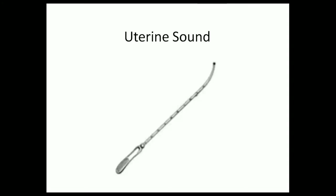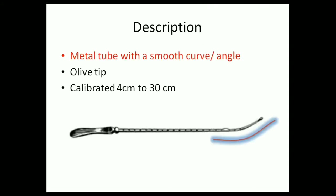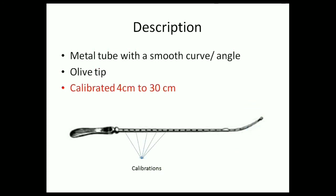Uterine sound is a long metal tube with a smooth angle or a curve. The top end of the uterine sound is blunt and has a special name — it is called an olive tip. The tube is calibrated and has markings from 4 cm to 30 cm.